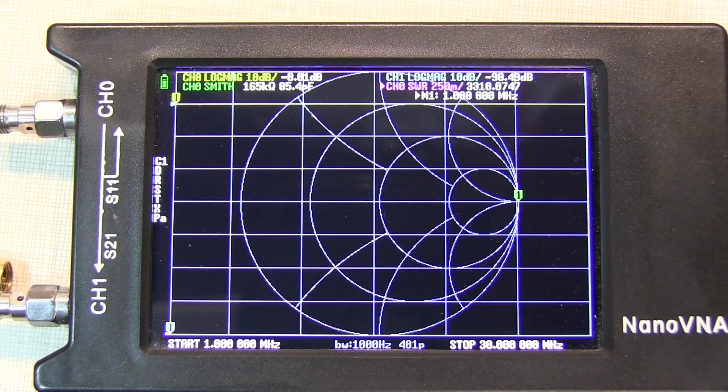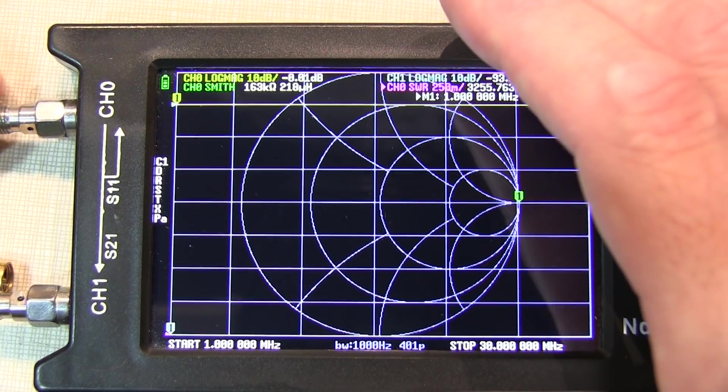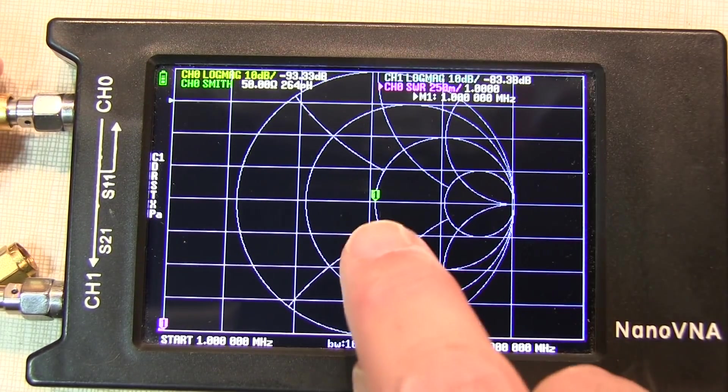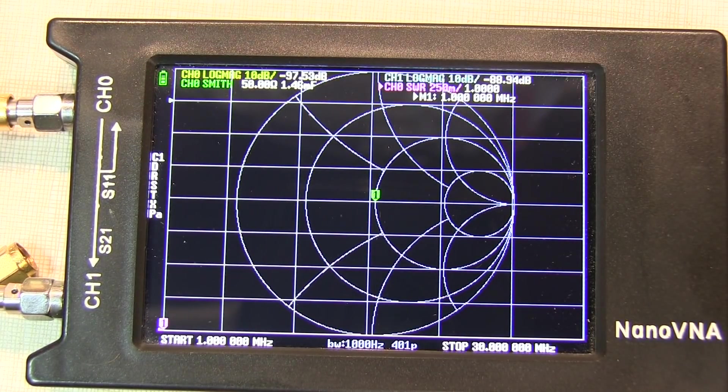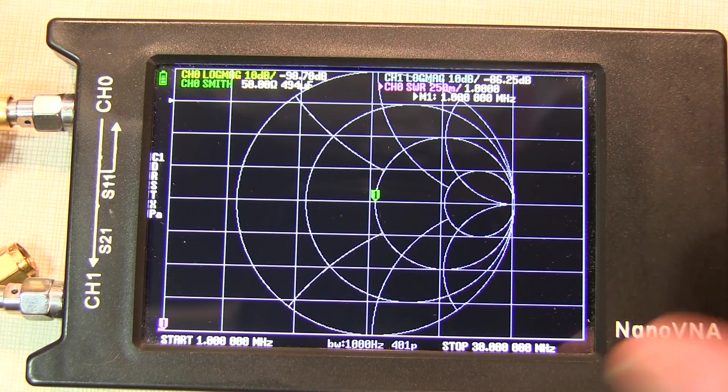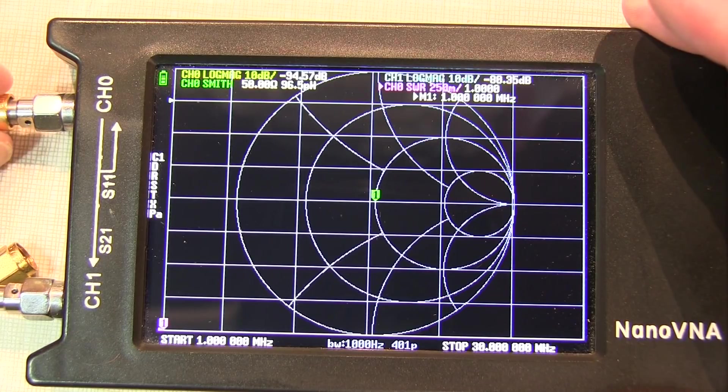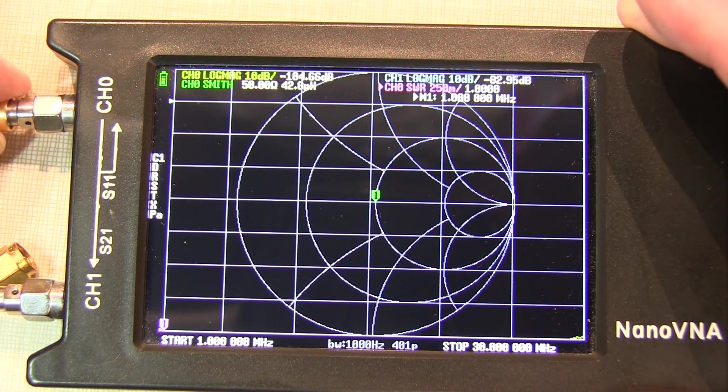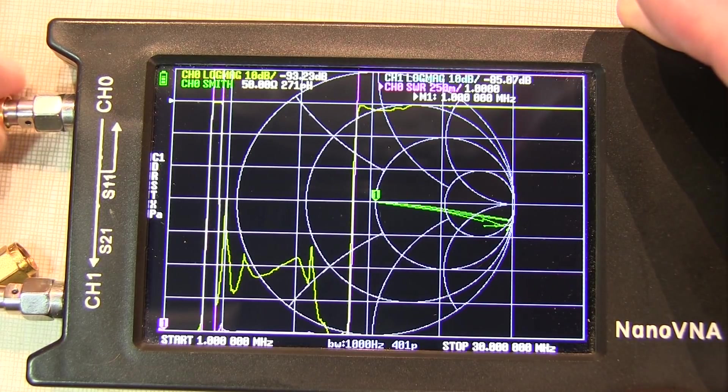So now with us properly calibrated, for example, we can throw a 50 ohm load back on the input, and we can see that that goes right to the center of the Smith chart, indicating a 50 ohm load. Now we're expecting this amplifier to present a near 50 ohm load, based on the design that's described in the paper, to RF signals. So let's go take a look at what that is.